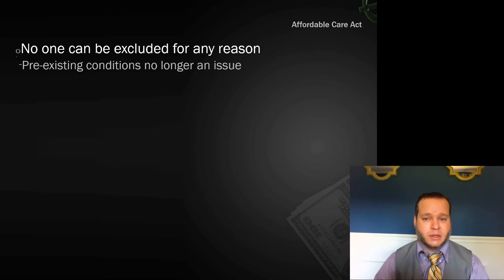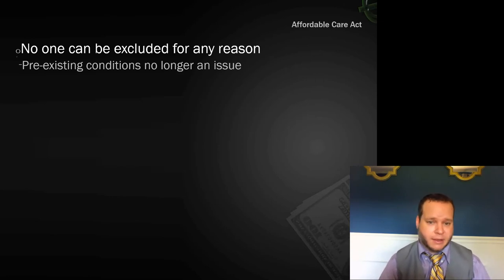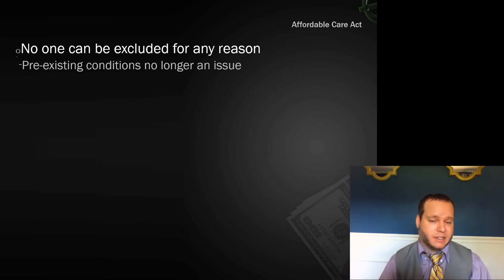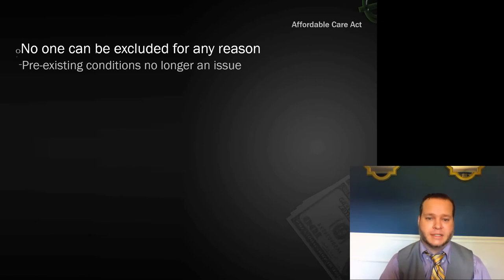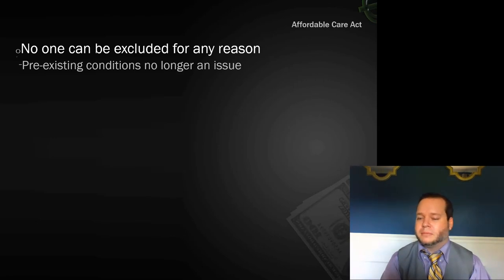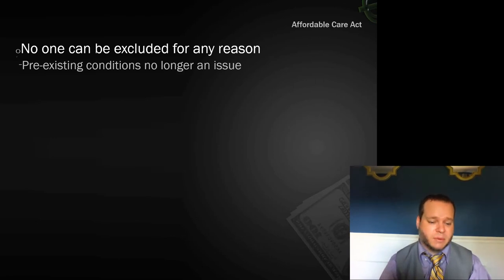The first thing the Affordable Care Act changed is that it made it illegal to exclude people from a health insurance policy based on pre-existing conditions. For example, my dad had a heart attack, and after that he was scared to lose his insurance — because if he tried to get on a new policy, his heart disease would be considered a pre-existing condition and a new policy could refuse to cover him. The Affordable Care Act got rid of that, so now they can't say 'nope, you're not allowed on the policy.'